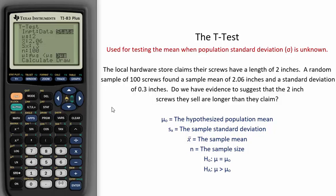The local hardware store claims their screws have a length of 2 inches. This is the hypothesized population mean μ₀. A random sample of 100 screws found a sample mean of 2.06 inches and a standard deviation of 0.3 inches.